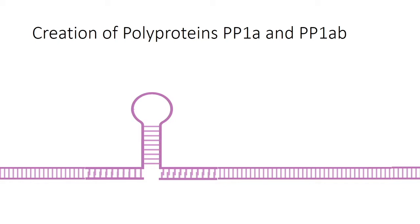This overview shows the translation of the viral RNA by a host ribosome in the cell. This step dictates the formation of polyproteins needed to make the enzymes the virus uses in later stages of replication.